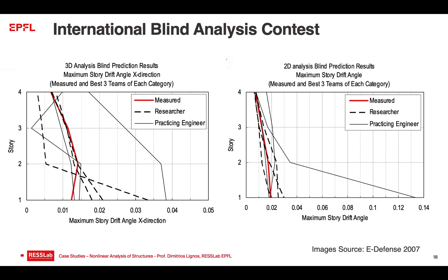Looking at the drift prediction at 60% intensity, the measured response corresponds to a uniform drift profile consistent with a design basis event. Some participants predicted drift concentration in both 3D and 2D analysis. One response sticks out — it predicts a soft story under the design basis earthquake for a code-conforming system, which should prompt you to reconsider the model. Normally, soft story collapse risk is high only at higher intensities beyond what we design for.